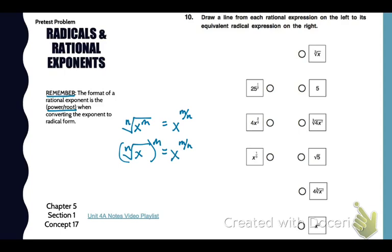Look at problem 10. We're going to draw a line from each rational expression on the left to the radical expression. So 25 to the 1/2 power — we can rewrite that using a radical. 25 goes underneath, and that's a square root. The square root of 25 is 5.